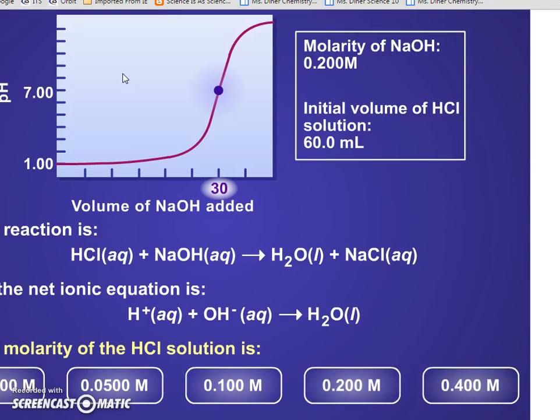We can use the values from the pH curve to do some stoichiometry, because we have all the information we need to find the moles of given. Our moles of given comes from concentration and volume. We are given the concentration, that's molarity: 0.2 moles per liter of sodium hydroxide. We know the volume for the endpoint was 30 milliliters of sodium hydroxide.